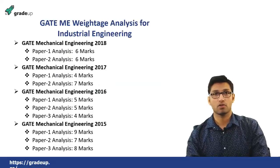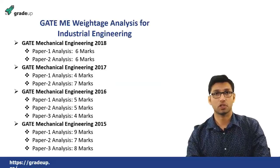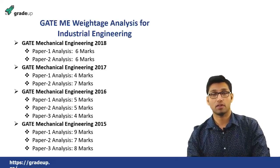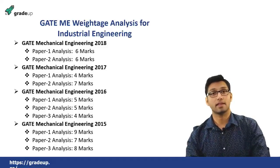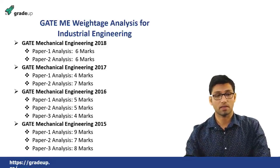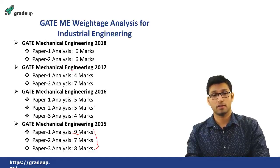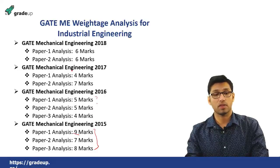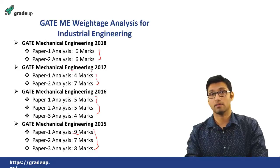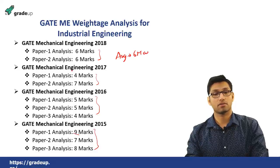Let's start with the weightage. I have done a weightage analysis of the previous year question papers of the GATE exam. For this subject of industrial engineering, it is asked with a minimum of 5 marks and maximum of 9 marks across different sets. In GATE 2015, it ranged from 8 to 9 marks; for 2016 it was 4 to 5 marks; for 2017 between 4 to 7 marks; and for 2018 it was 6 marks. On average, this subject is asked for 6 marks in the GATE exam.